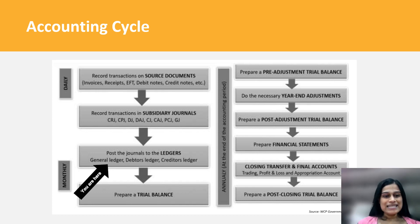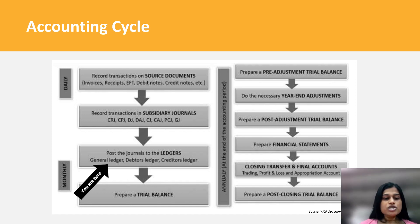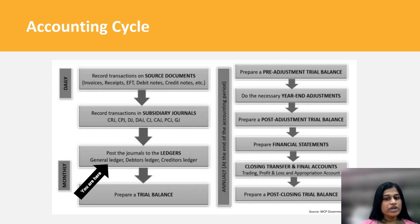The accounting cycle guides you from doing transactions through to journal entries, the general ledger, preparing your trial balance, and then your financial statements. On a daily basis you'll be recording transactions on source documents using invoices, receipts, EFT, debit notes, credit notes, and any other source documents you may receive from third parties.